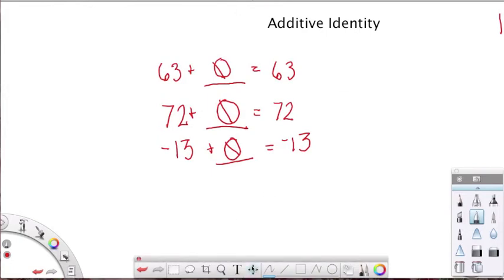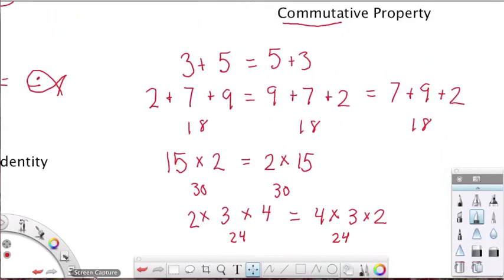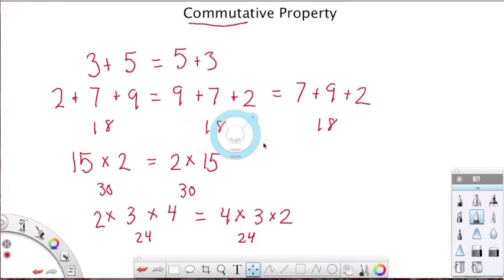And then we also looked at the commutative property. The commutative property says that when we're working with addition as our operation, we can change the order or move or commute the terms around and it will not affect our total or sum. And the same thing is true of multiplication. Since multiplication is really repeated addition, we can move our terms around when we're multiplying and it will not affect our product. The product will be the same because multiplication is repeated addition.